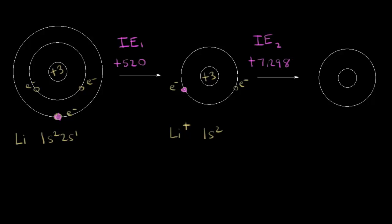If we take away that second electron, we still have three positive charges in the nucleus but only one negative charge — only one electron. So this is no longer the lithium +1 cation; this is a lithium +2 cation, because three minus one is plus two. The electron configuration would be only one electron in a 1s orbital: 1s1.